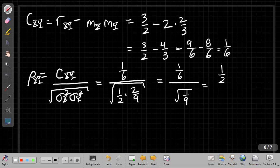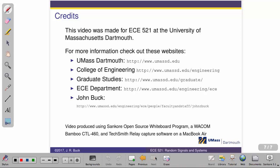So again, this is another video for ECE 521 at UMass Dartmouth. The main point today was just going through some examples showing the mechanics of how we calculate the correlation and the covariance for bivariate random variables. I'll talk to you next time. Thanks.